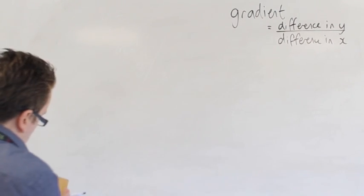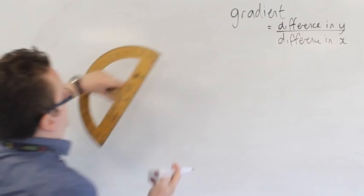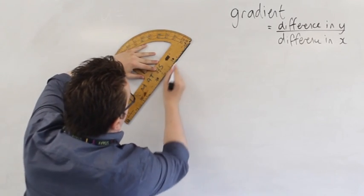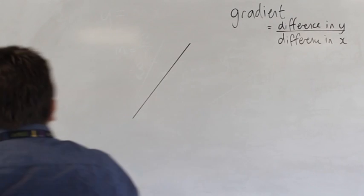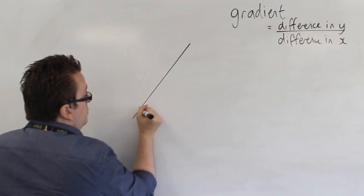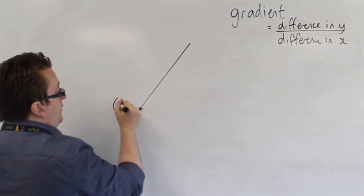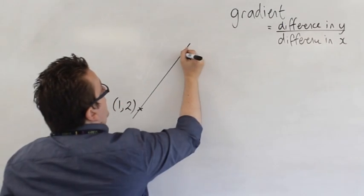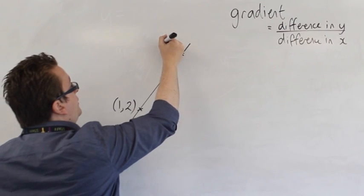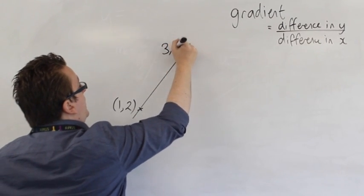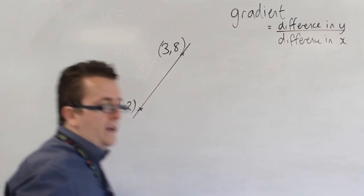So let's say, instead, if I draw another line - let's say we know that the line goes through a point, let's say (1, 2), and it also goes through a point, let's say (3, 8), for example.